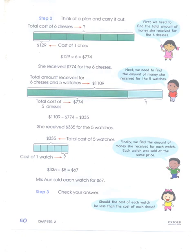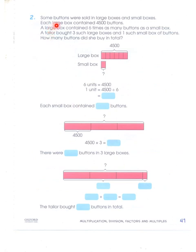Now we will do a problem given to us. Some buttons were sold in large boxes and small boxes. Be careful with these confusing words. Each large box contained 4,500 buttons. A large box contained 6 times as many buttons as a small box. A tailor bought three large boxes and one small box. How many buttons did she buy in total?